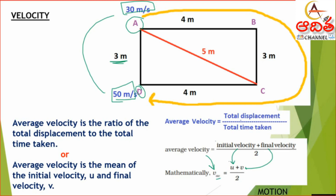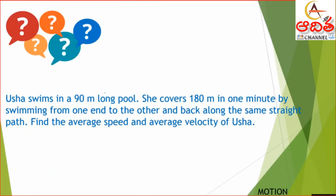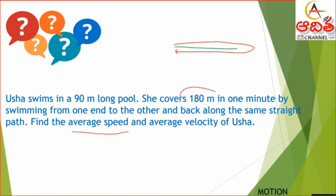You don't need to memorize it — just remember the basic concept. Now let's do a quick question. Usha swims in a 9-meter long pool, covering 180 meters in one minute by swimming from one end to the other and back along the same straight path. For average speed, the distance is 180 meters. We must convert 1 minute to 60 seconds, then divide: 180/60 = 3 meters per second.